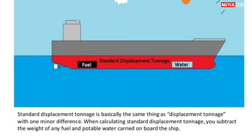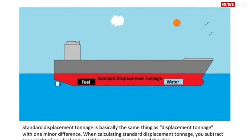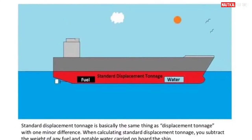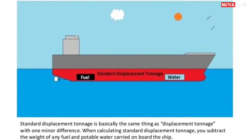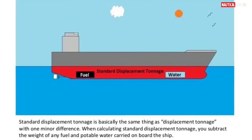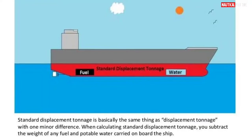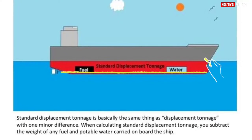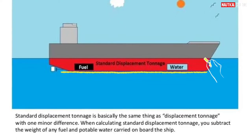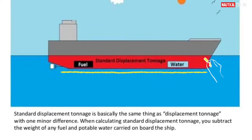Standard displacement tonnage is basically the same thing as displacement tonnage with one minor difference: when calculating standard displacement tonnage, you subtract the weight of any fuel and potable water carried on board the ship.